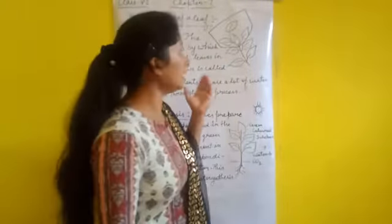For knowing the functions of a leaf — how does a leaf function, what work does it do in a plant — we have to perform an activity. For this activity we require a transparent polythene bag and a branch of a plant.